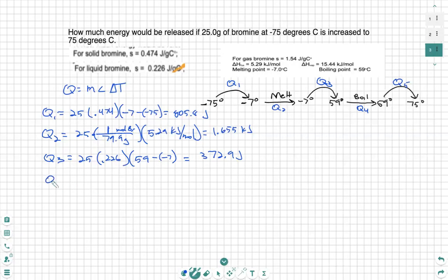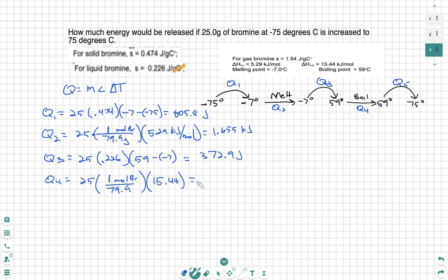Alright. Next, we're going to have Q4, which is another phase change. We're going to boil. So we're going to use the mass, multiply that by 1 over the molar mass, which we found above to be 79.9. Multiply that by our delta H of evaporation. And we see we have 15.44 kilojoules. Multiply that out. 25 times 15.44 divided by 79.9.